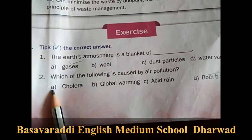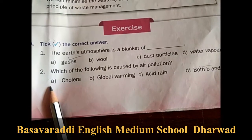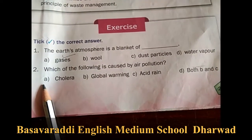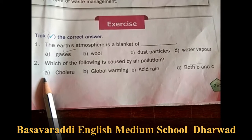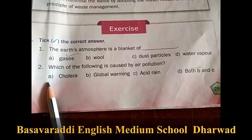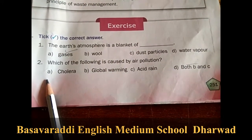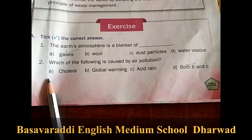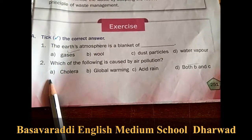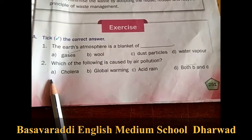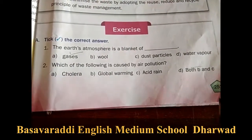Next, the exercise part. First question: tick the correct answer. The earth's atmosphere is a blanket of blank — options are gases, wool, dust particles, water vapour. The answer is 'gases'. Second question: which of the following is caused by air pollution? The correct option is D — both B and C: global warming and acid rain are caused by air pollution.